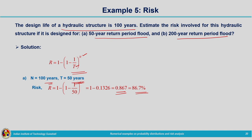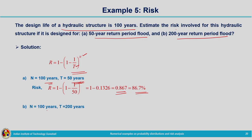For the second case, T = 200 years and N = 100 years. When designing major structures like dams, a higher return period is selected to reduce risk. Substituting into the risk formula: R = 1 − (1 − 1/200)^100 = 0.394, or 39.4%. Increasing the return period significantly reduces the associated risk.